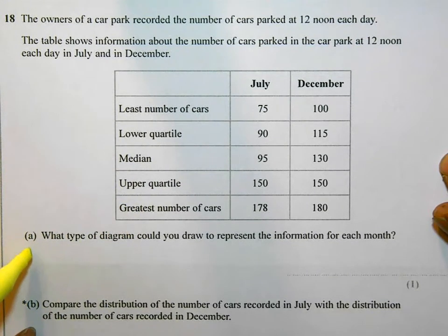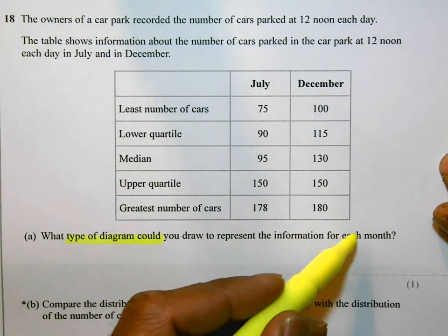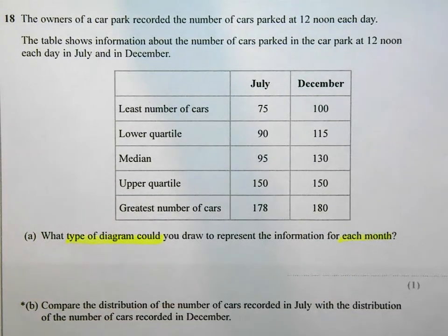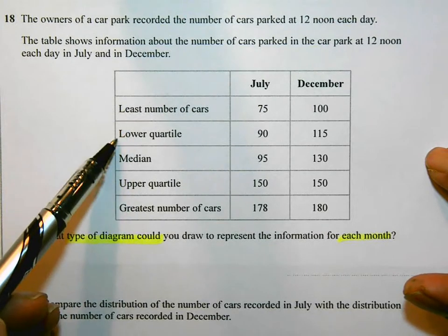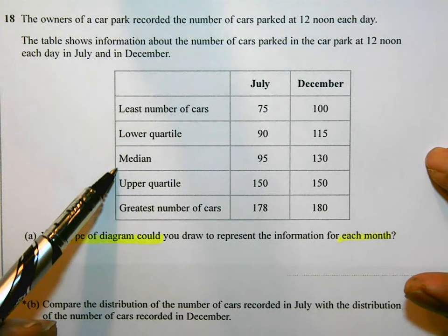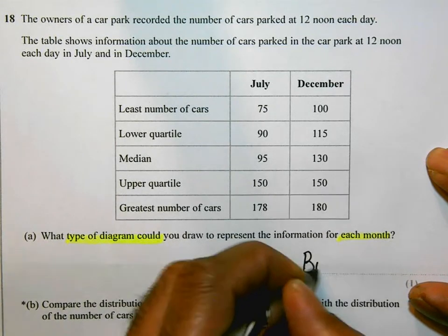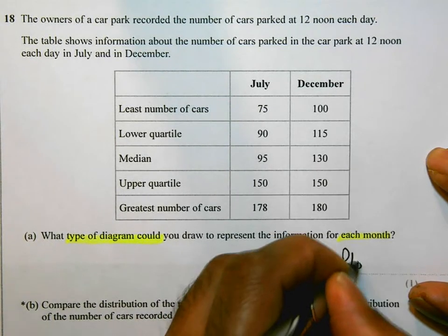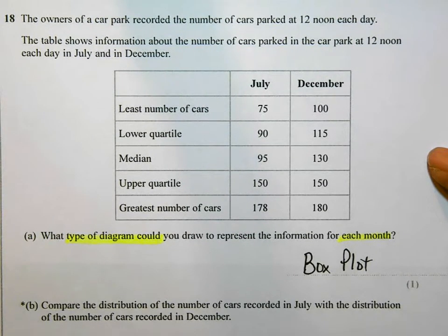Let's look at part A. What type of diagram could you draw to represent the information for each month? You should recognize from the fact that they're talking about lowest value, lower quartile, median, upper quartile, and greatest value — it's a box plot that they're referring to, and that's a pretty easy and straightforward mark.